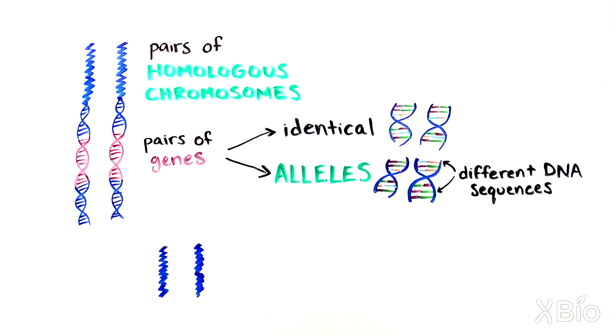If the two genes on homologous chromosomes produce the same phenotype, for example, both causing blue eyes, the person is homozygous for that phenotype.